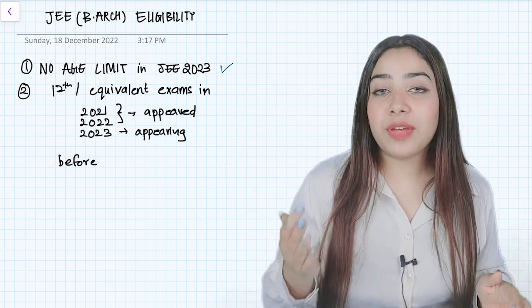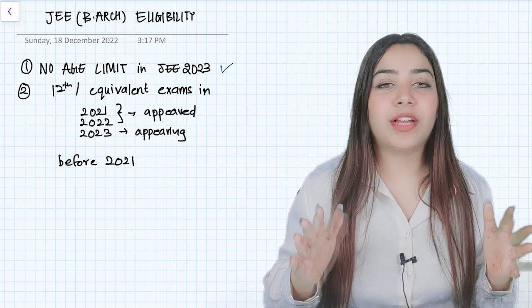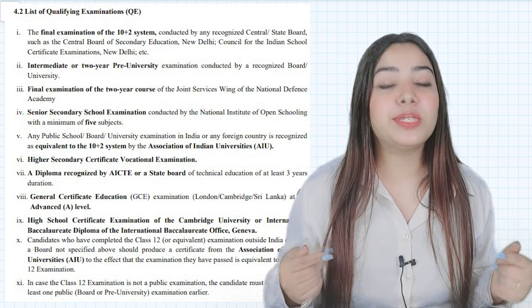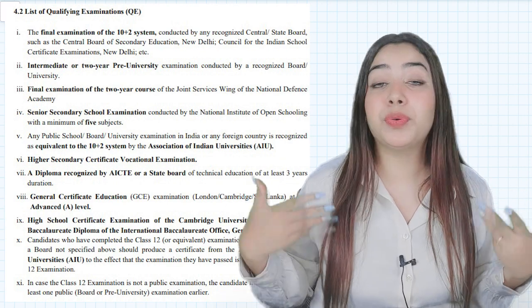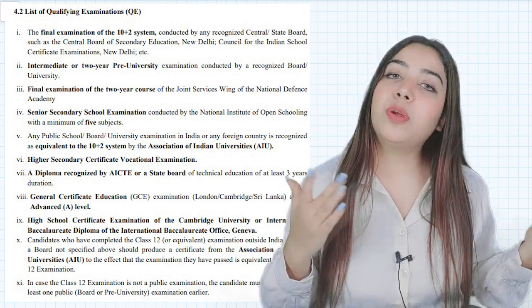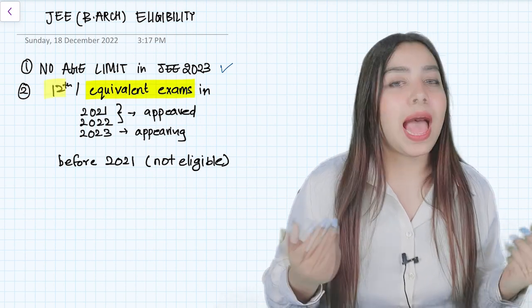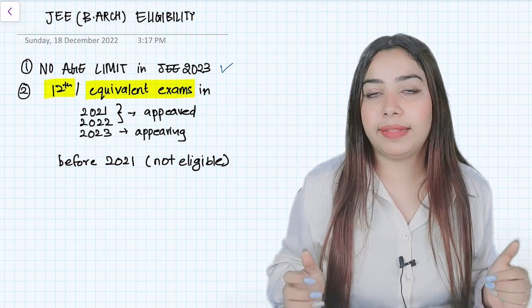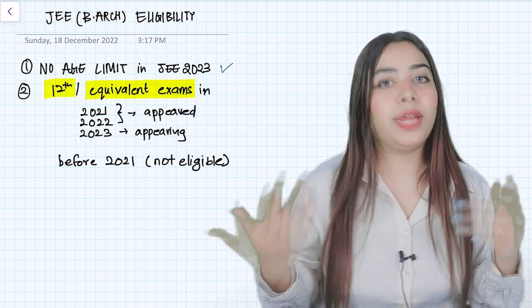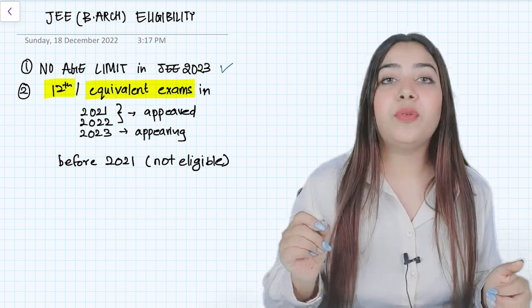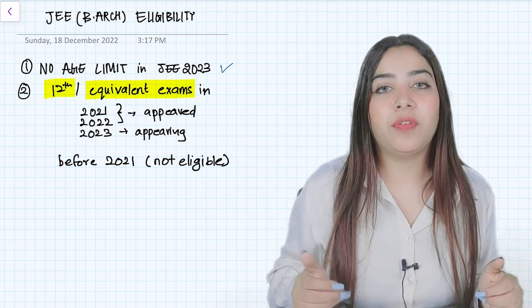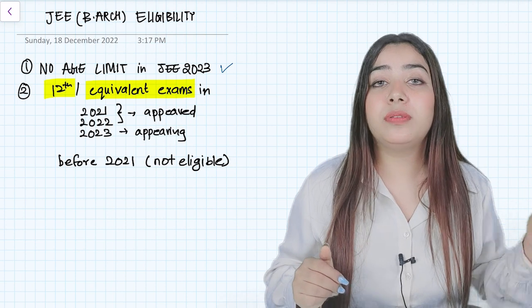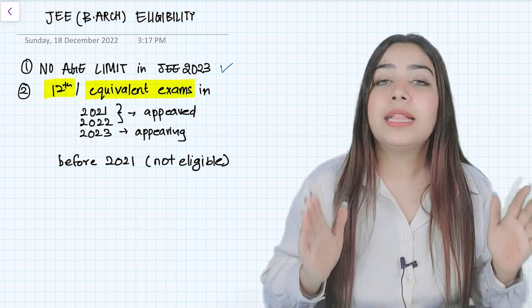If you have given your board examination or any other qualifying examinations—I will provide the list of qualifying examinations which you could have appeared for apart from board examinations, as well as some students are also diploma students, so not everyone gives board examination—so it's board or equivalent examinations. If you have appeared for board or other equivalent examinations in 2019 or before that, before 2021 basically, then you are not eligible for JEE Paper 2 examinations.